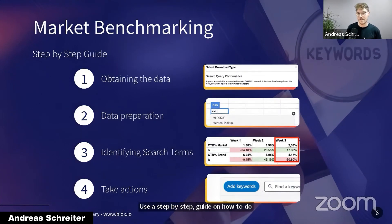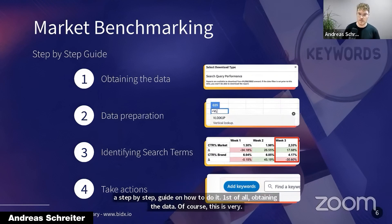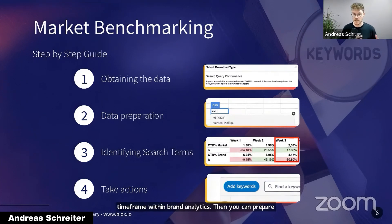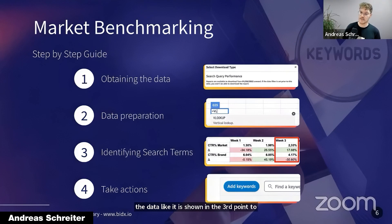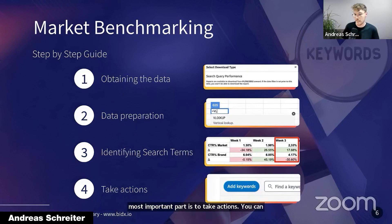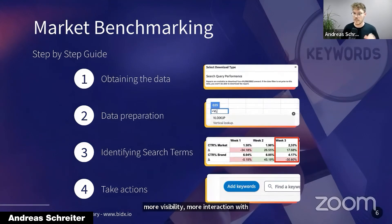Here's a step-by-step guide on how to do it. First, obtaining the data — there is a possibility to download the reports for a specific product, for the brand, and for a timeframe within Brand Analytics. Then you can prepare the data with Google Sheets or Excel to identify the search terms where the market is developing in another direction than your brand or product. And then — always the most important part — take action. You can identify those search terms, and if you want more visibility and more interaction with customers, add those keywords into campaigns and increase the bids to ensure you have visibility, clicks, and the corresponding sales.